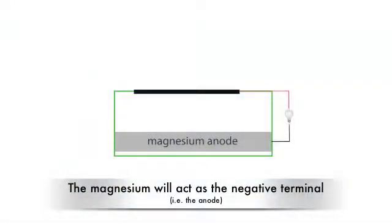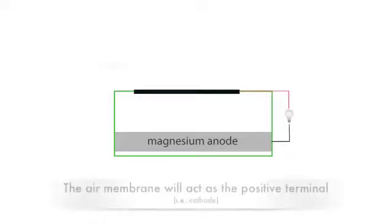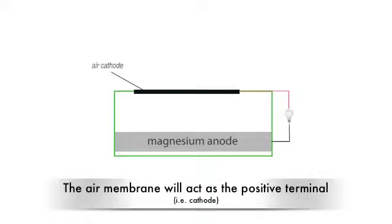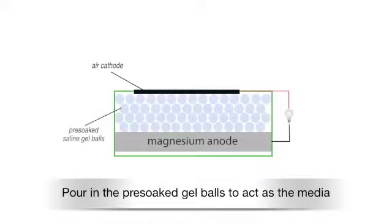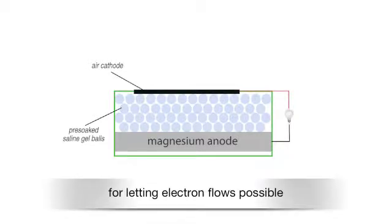The magnesium will act as the negative terminal. The air membrane will act as the positive terminal. Pour in the pre-soaked gel balls to act as the media for letting electron flow possible.